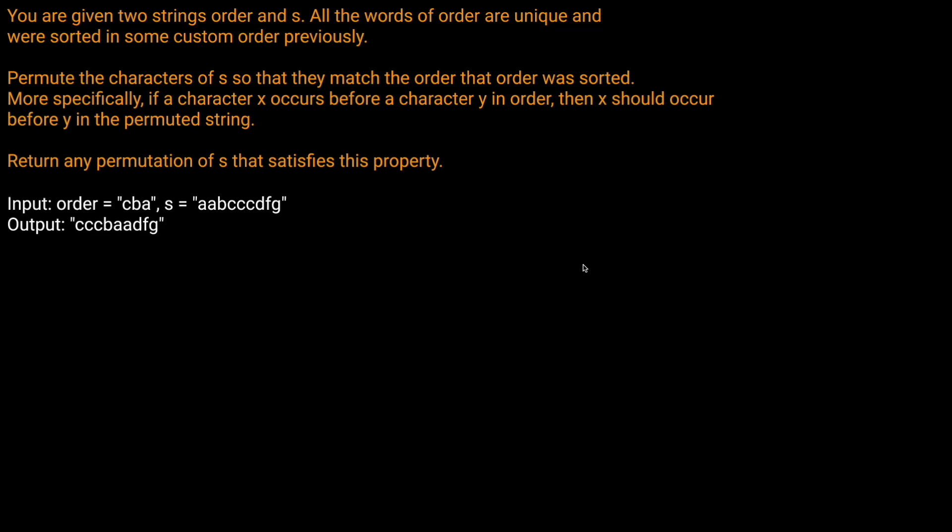You are given two strings, ORDER and S. All the words of ORDER are unique and were sorted in some custom order previously. Permute the characters of S so that they match the order that ORDER was sorted. More specifically, if a character X occurs before a character Y in ORDER, then X should occur before Y in the permuted string. Return any permutation of S that satisfies this property.